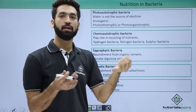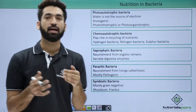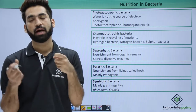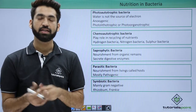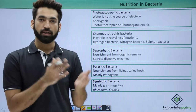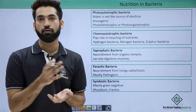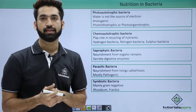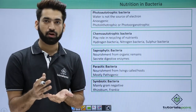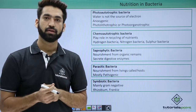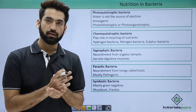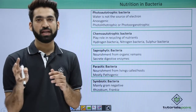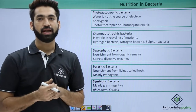Photo-autotrophic bacteria harness sunlight and convert that light into chemical energy, which is then used for glucose or food formation. In plant photosynthesis, CO₂ reacts with water to produce glucose, with oxygen released as a by-product. You must be knowing about this photosynthetic reaction.